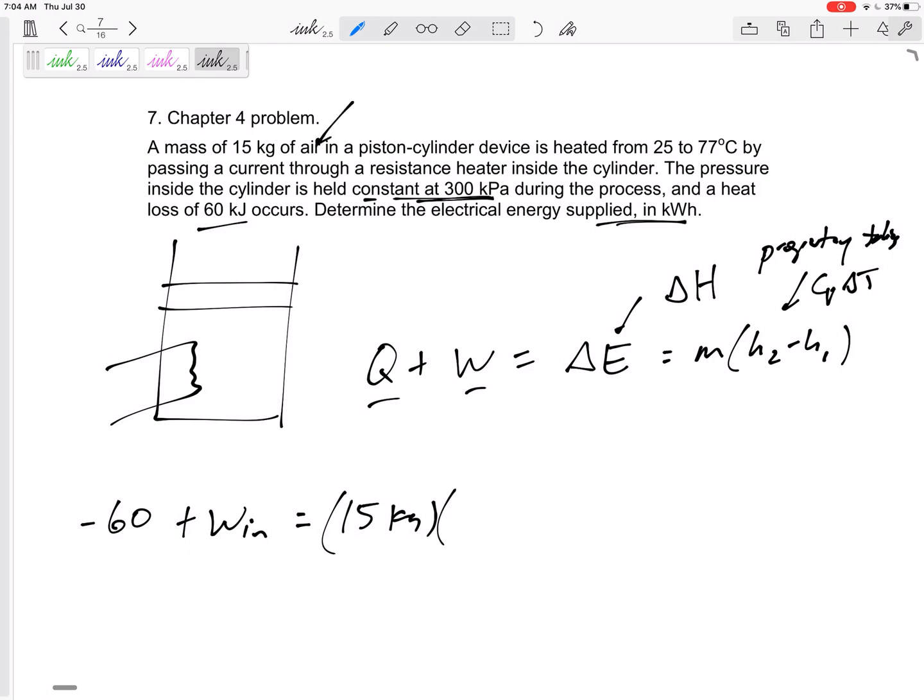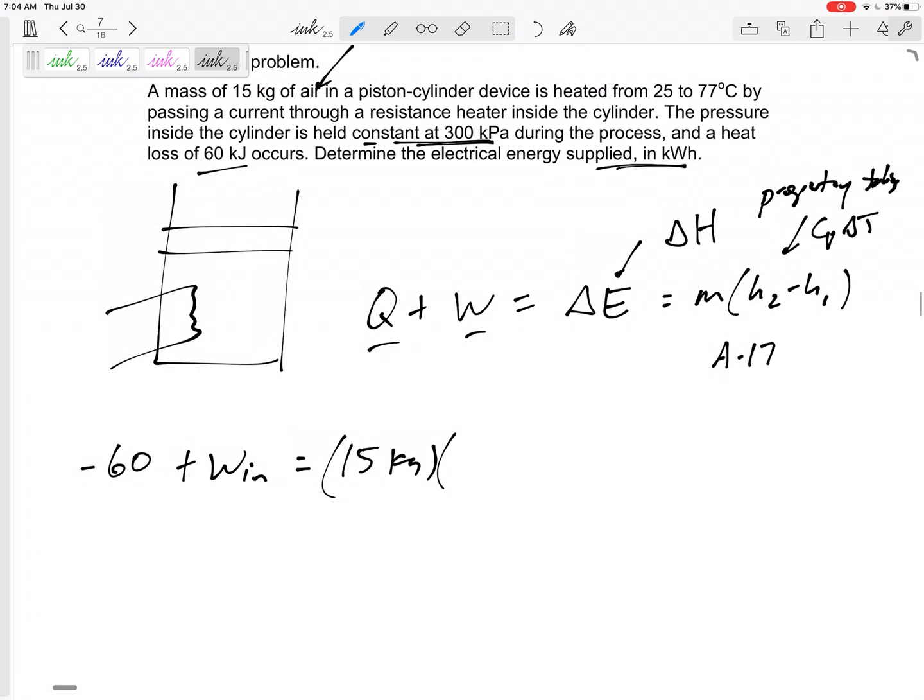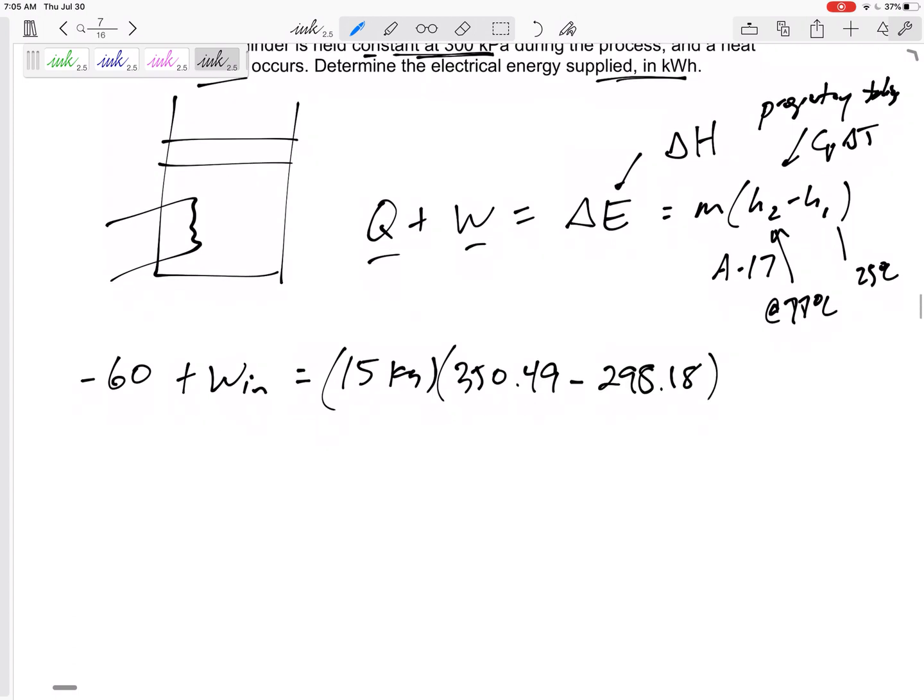Alright, so this is air, table A17. Air is just the H, it's just a function of temperature. So the H at 77 degrees, the H at 25 degrees C. I've got 350.49 minus 298.18. I would get a work of 845 kilojoules.